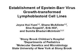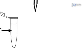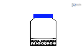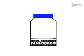The overall goal of this procedure is to generate Epstein-Barr virus transformed lymphoblastoid cell lines, or LCL, from human B cells. This is accomplished by first isolating peripheral blood mononuclear cells from human blood. Next, the cells are infected with Epstein-Barr virus in the presence of FK506, an immunosuppressive agent.